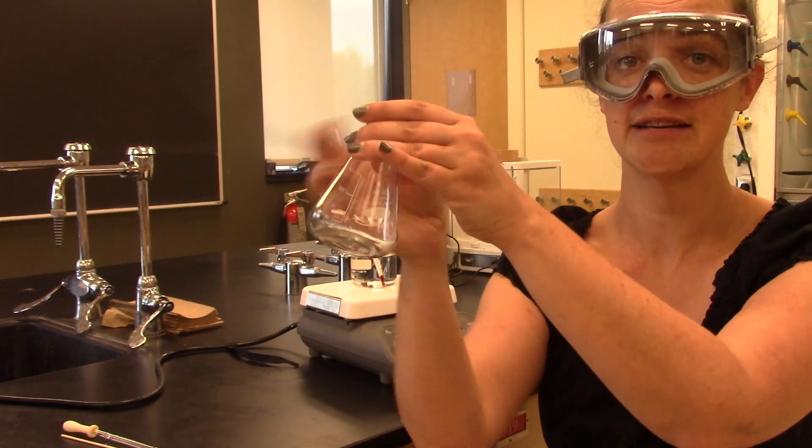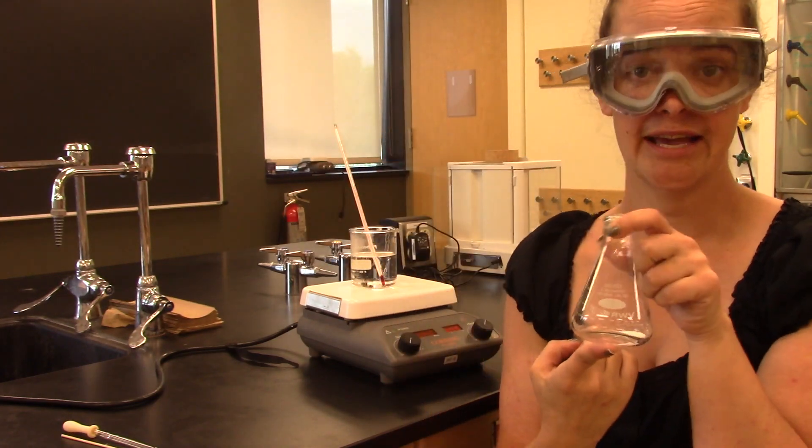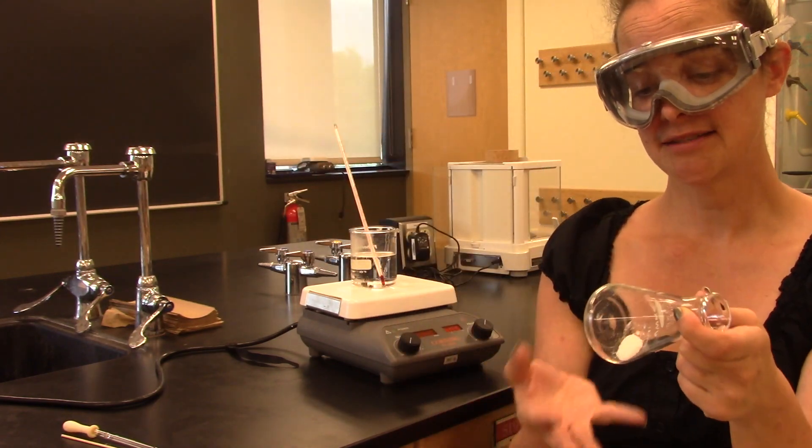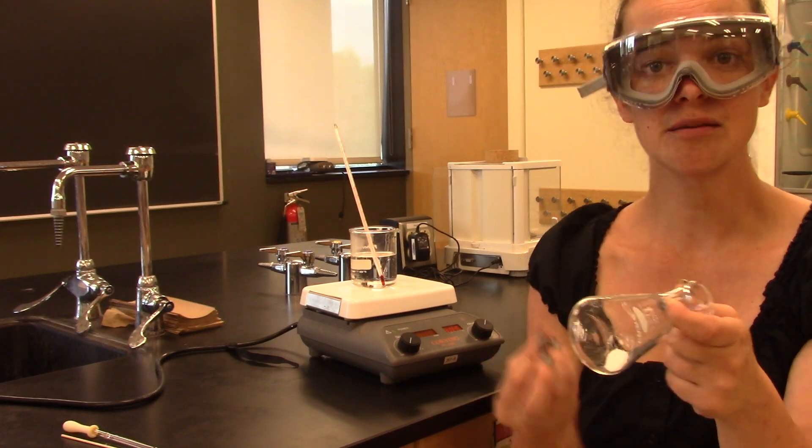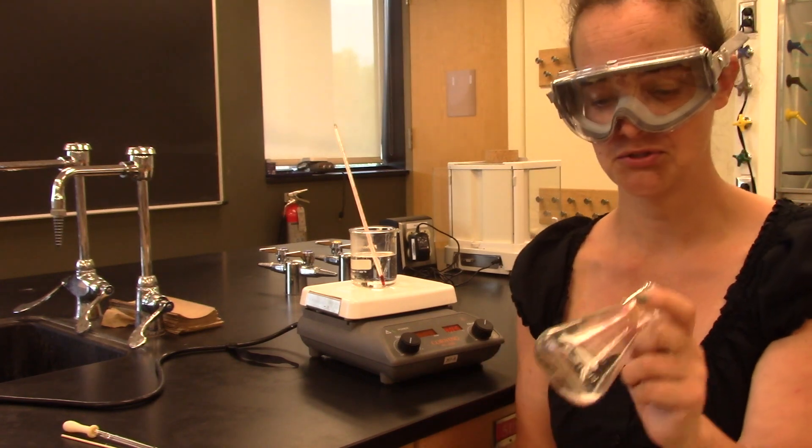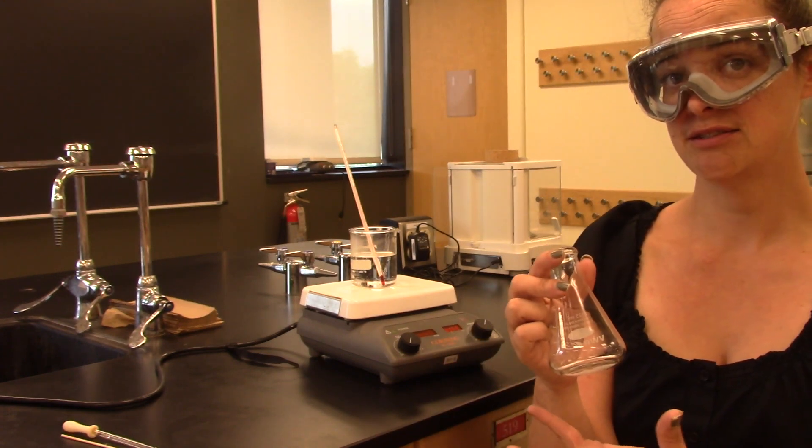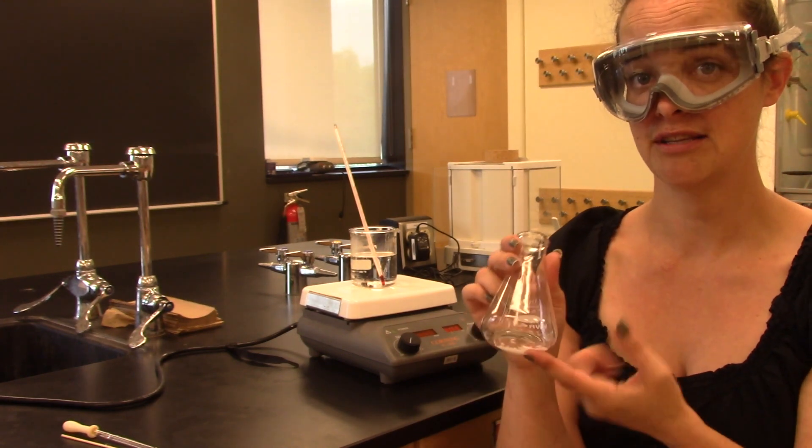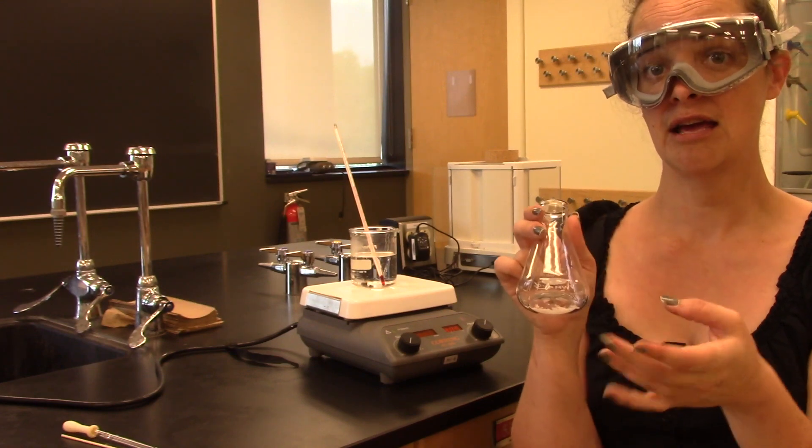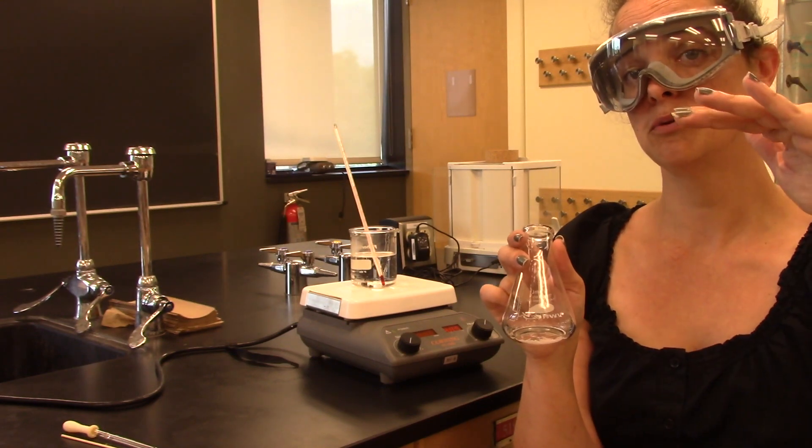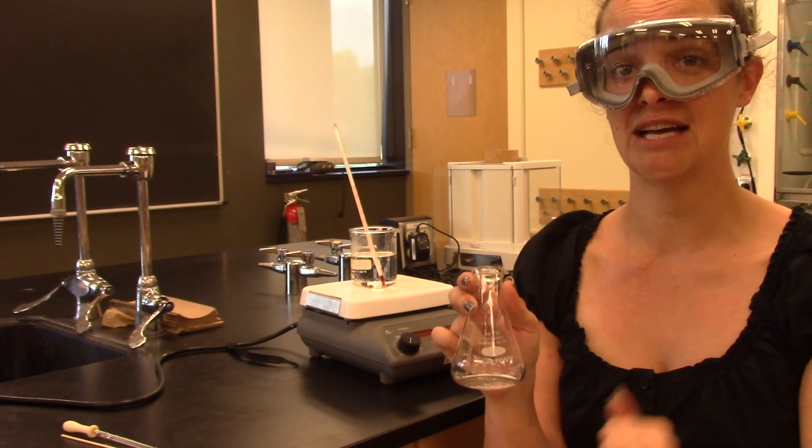I have inside this Erlenmeyer flask about a gram of phthalic acid, but this phthalic acid is not the purest. It's got some kind of impurity trapped inside the crystal structure. So in order to get rid of that impurity, what I need to do is dissolve everything in here and then find a way to precipitate only the pure phthalic acid compound.